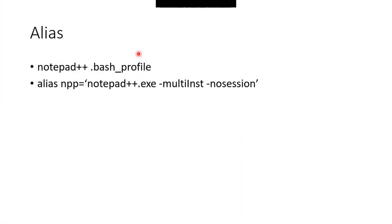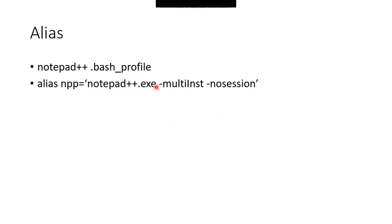To create an alias, we need to open a file called '.bash_profile'. If you don't already have one, it will be created for you. You need to add this line to .bash_profile: 'alias' followed by the short name you want — in my case 'npp' — then equals 'notepad++.exe' followed by '--multiInst' and '--no-session'.